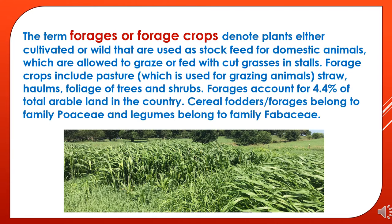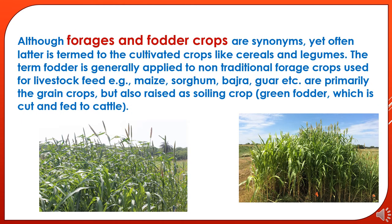The term forages or forage crops denotes plants, either cultivated or wild, that are used as stock feed for domestic animals which are allowed to graze or fed with cut grasses in stalls. Forage crops include pasture used for grazing animals, straw, stems, foliage of trees and shrubs. Forages account for 4.4% of total arable land in the country.